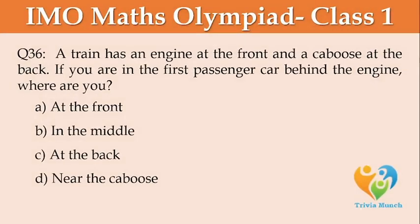A train has an engine at the front and a caboose at the back. If you are in the first passenger car behind the engine, where are you? A: at the front, B: in the middle, C: at the back, D: near the caboose.